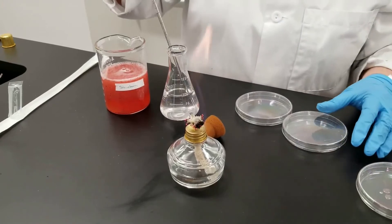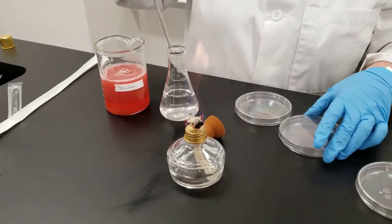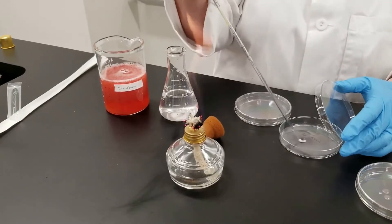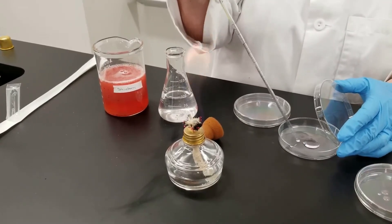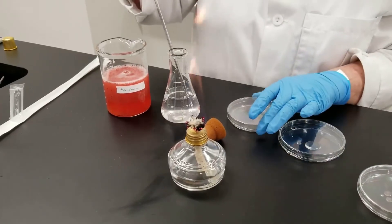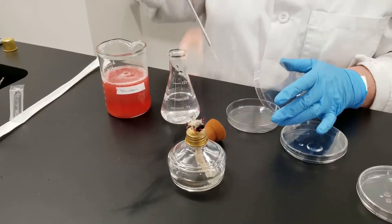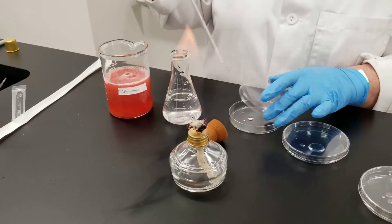Take a milliliter out, put it into plate number three. And in the last plate, plate number four, we're just going to take a tenth of a milliliter out. So this way we will have four different dilutions.